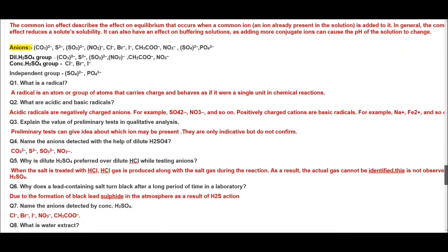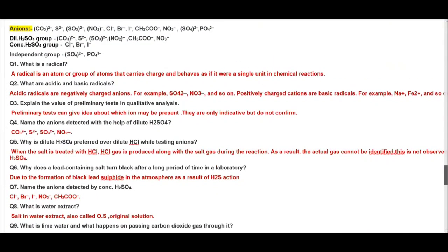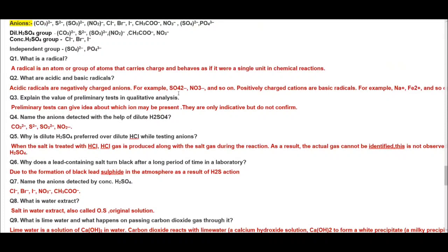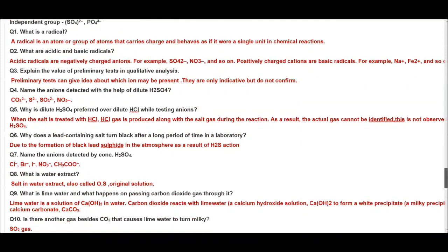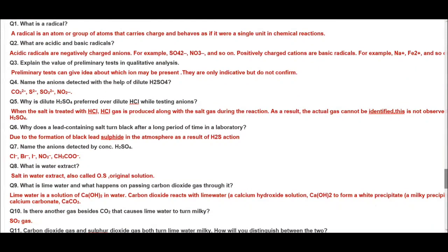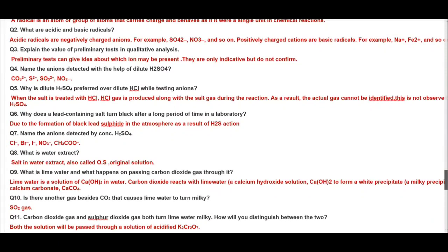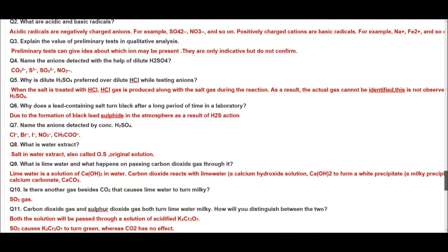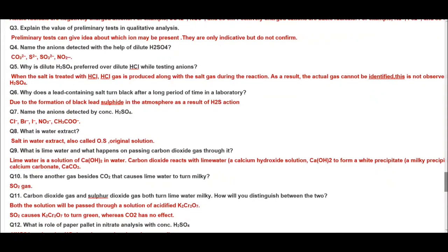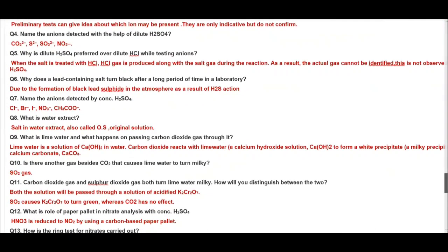So next we have questions related to anions. First to begin with we need to know into which categories, into which groups are the anions classified. We have dilute sulfuric acid group: carbonate, sulfide, sulfite, nitrite. Remember the formula of nitrite. This is one mistake children commonly make. Concentrated sulfuric acid group is chloride, bromide, iodide, acetate and nitrate. And independent group radicals are sulfate and phosphate. So what is a radical? A radical is an atom or a group of atoms that carries charge and behaves as if it were a single unit in a chemical reaction. Then what are acidic and basic radicals? That I've told you. Acid radicals are negatively charged anions and basic radicals are positively charged cations. Explain the value of preliminary tests. Preliminary tests are only indicative, they do not give any confirmation, they just give us the direction in which we can proceed.